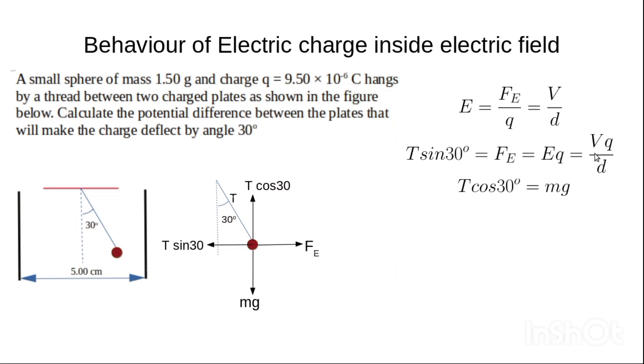Now to solve for V, we combine this equation with this one. We divide this equation by this, giving us T sin 30 / T cos 30 = Vq/d / mg. We can cancel the tension, which gives us tan 30 = Vq/(dmg). If you make V the subject of the formula, you will have V = dmg tan 30 / q, where d is the distance between the two plates, m is the mass of the charged body, g is acceleration due to gravity, and q is the charge which is 9.5 × 10^-6.